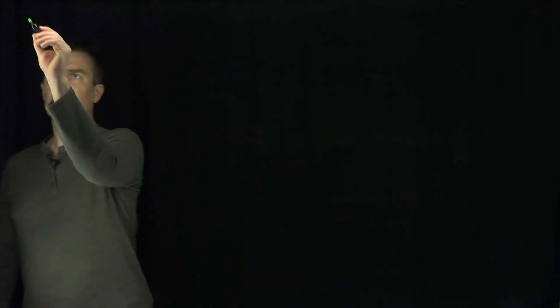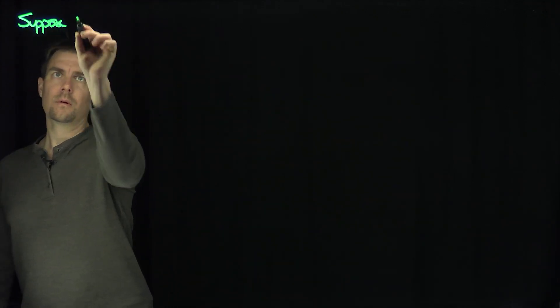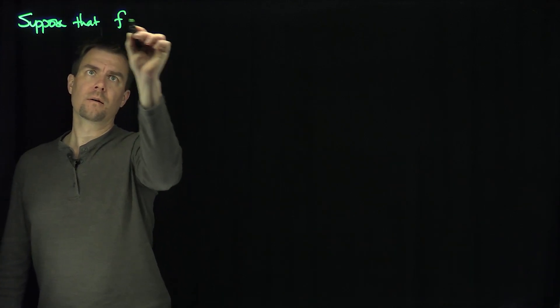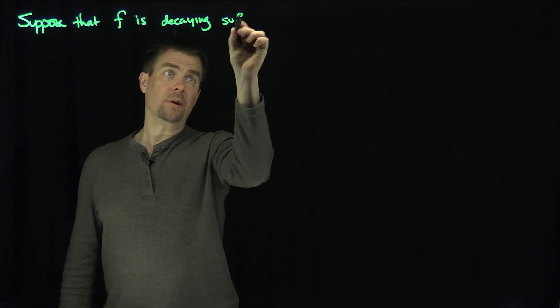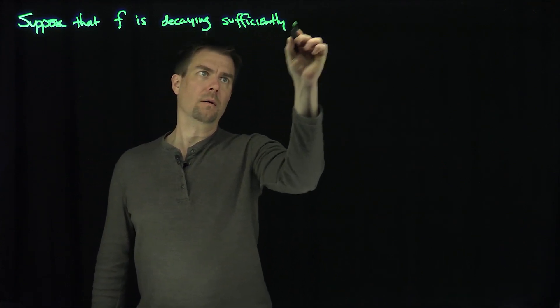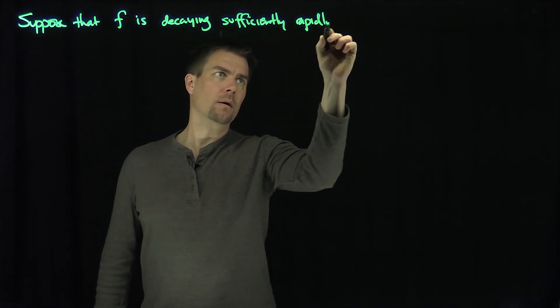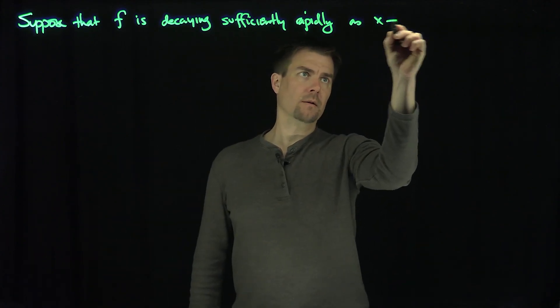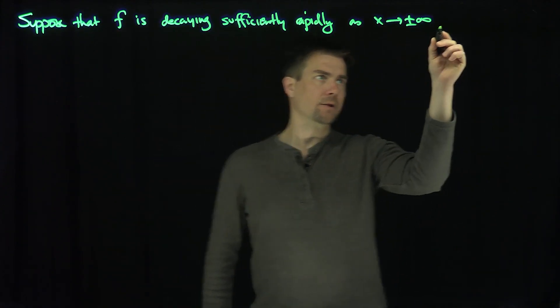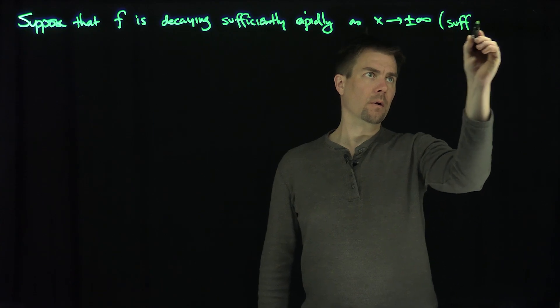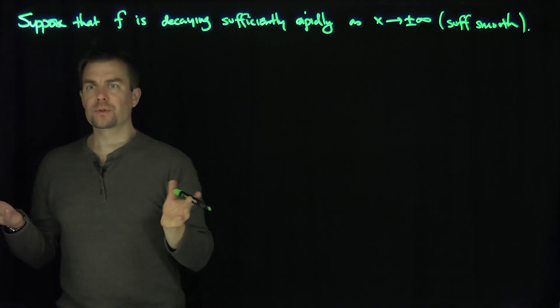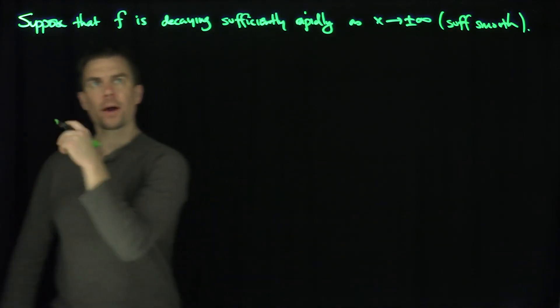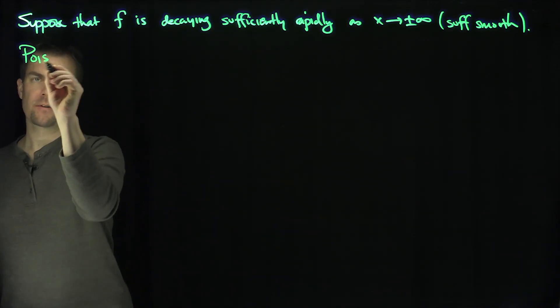Hello students. In this video we'll prove the Poisson summation formula. Let's suppose that f is decaying sufficiently rapidly as x approaches positive and negative infinity, and sufficiently smooth. Of course we can just say that f is a Schwartz class function or something akin to that. Then the Poisson summation formula states the following.